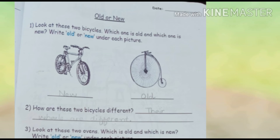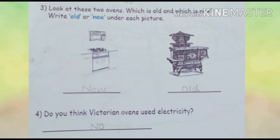Their wheels are different. Number 3, look at these two ovens — which is old and which is new? Write old or new under each picture. In the new oven you can see we can use gas or electricity to operate it, but the old ones are operated by fire. Number 4, do you think Victorian ovens use electricity? Victorian ovens are the old ones, so the answer is no — they are operated with fire and wood. Now you have to complete page number 85.